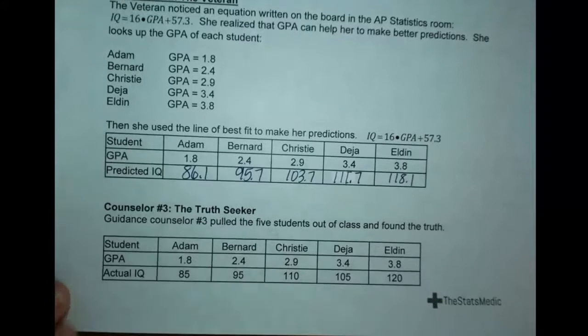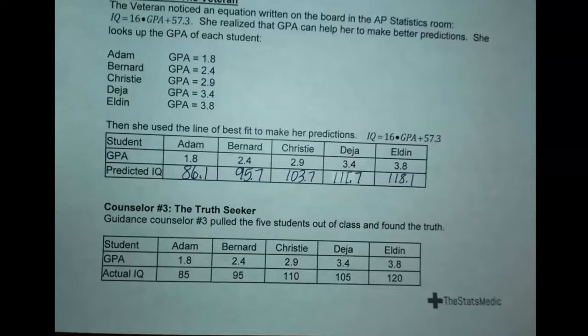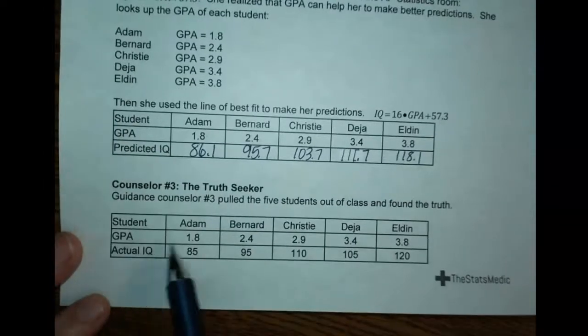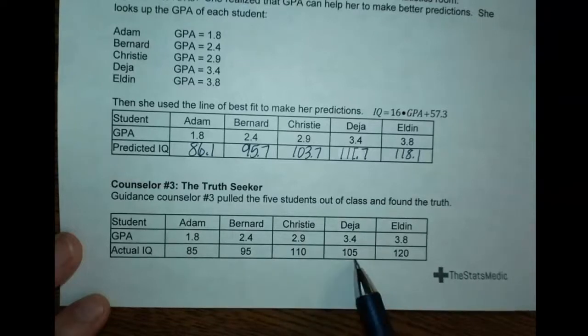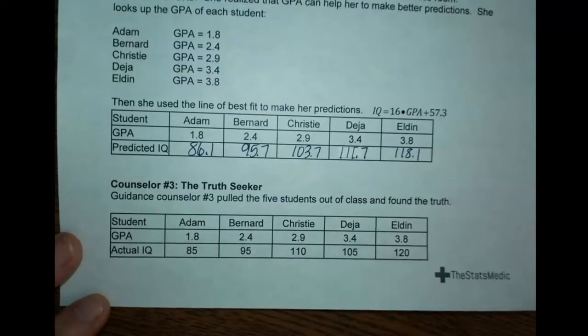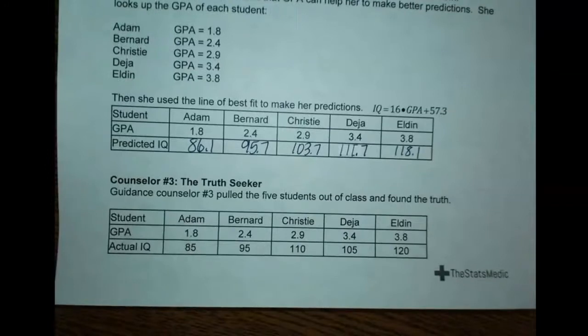Finally, we have the last counselor, the truth seeker. This guidance counselor pulled the five students out of class and found the truth. Adam actually has an IQ of 85, Bernard has an IQ of 95, Christine has an IQ of 110, Deja 105, and Eldon 120. Let's flip over and see what we can do.